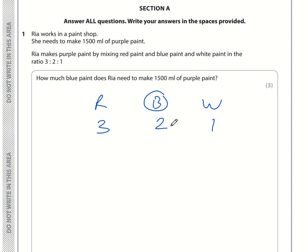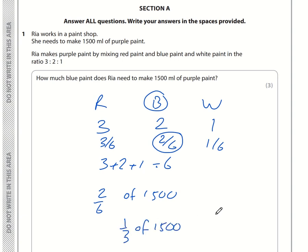What we need to do here is work out what fraction is blue. We're going to add these numbers up. 3 plus 2 plus 1 is 6. So 2 sixths is going to be blue. We want to work out 2 sixths of 1500ml. We can simplify this fraction. 2 sixths of 1500 is 1 third of 1500.